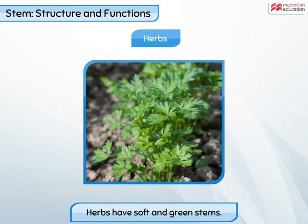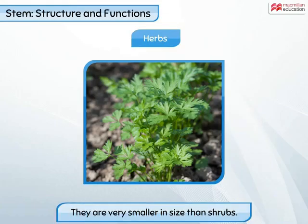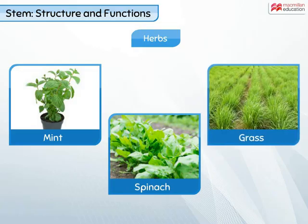Herbs are plants that have soft and green stems. As the stems of herbs are not very strong, these plants are often very small in size in comparison to shrubs. Mint, spinach, and grass are examples of herbs.